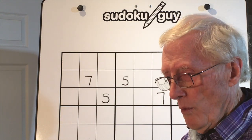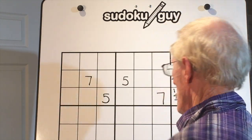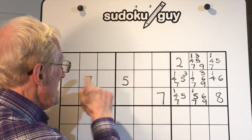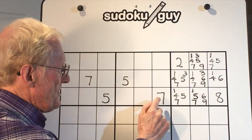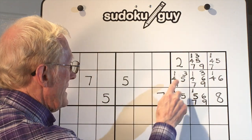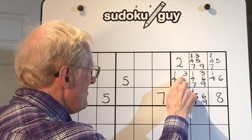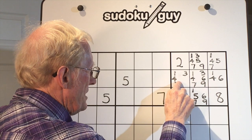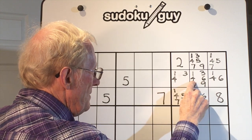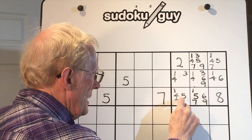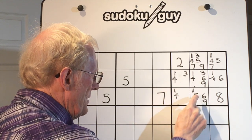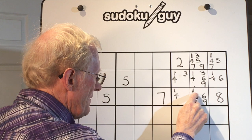Once I discovered that this 7-5 was there and that 5-7 was there, what I did was immediately get rid of this 5 and this 7 — this 7 can go, this 7 can go, this 5 and 7 can go, this 5 and 7 can go.